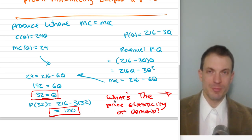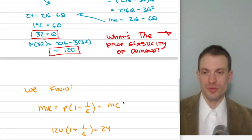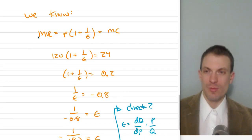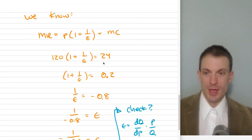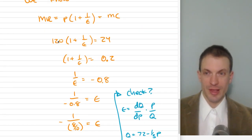Alright, so then my question, what is the price elasticity of demand here? So I'm going to approach this a couple different ways. So the first thing, we know marginal revenue equals marginal cost, or we have this expression, price times the quantity 1 plus 1 over elasticity. We know the price was 120. We know the marginal cost was 24. And then we can solve for the elasticity.